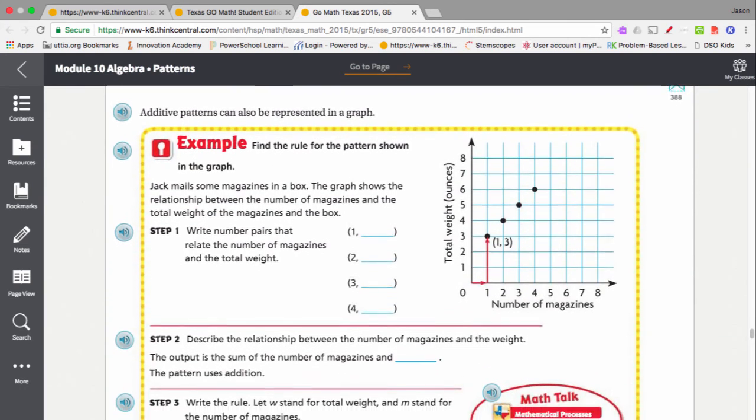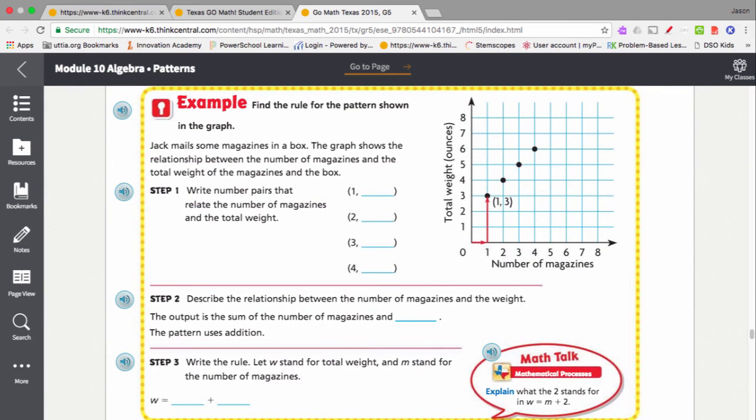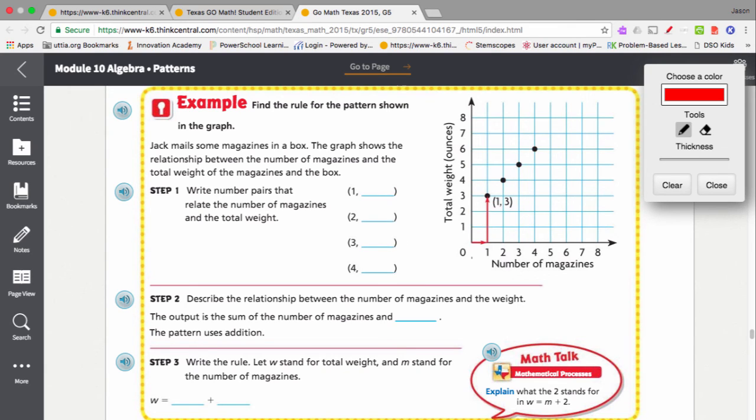Now, let's look at an additive pattern. In this case, we have Jack mailing magazines in a box. And the graph shows a relationship between the number of magazines and weight of the magazines and the box.